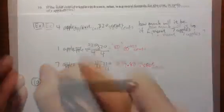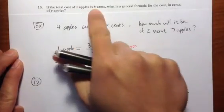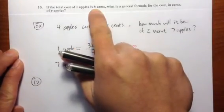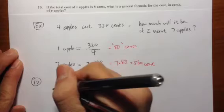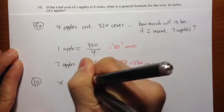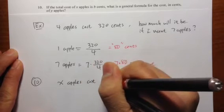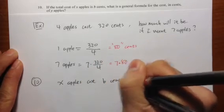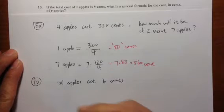For question 10, it says that we have X apples is B cents. So let me write this down. X apples cost B cents.